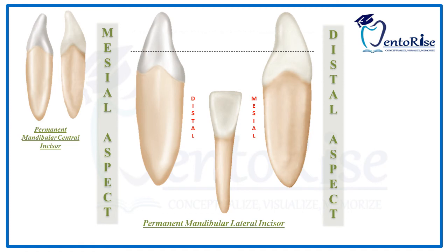Point number one: the mesial side of the crown is often longer than the distal side of the crown. This causes the incisal ridge, which is usually straight, to slope downward in a distal direction as you can see in the figure. Point number two: the mesial contact area is more towards the incisal ridge than the distal contact area, or conversely, the distal contact area is more towards the cervical line than the mesial contact area.